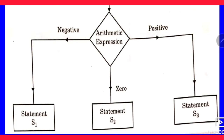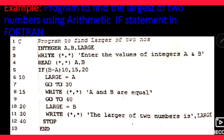Agar uski value negative aati hai to alag statement execute hogi, 0 aati hai to doosri statement execute hogi, aur agar positive aati hai to teesri statement execute hogi. We will understand this statement in terms of an example — the same example we already did for logical IF statement and block IF statement — to understand the difference between these three statements.